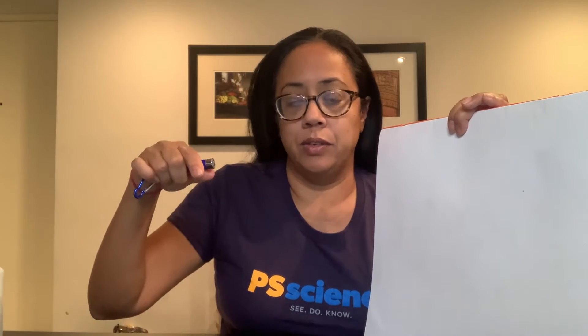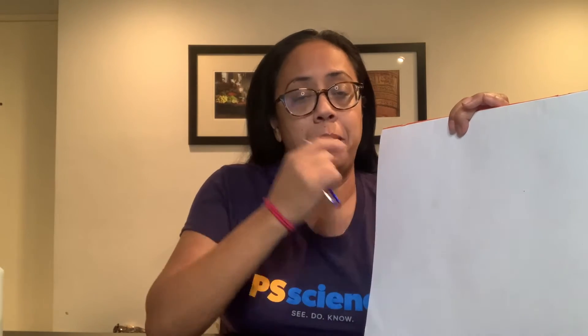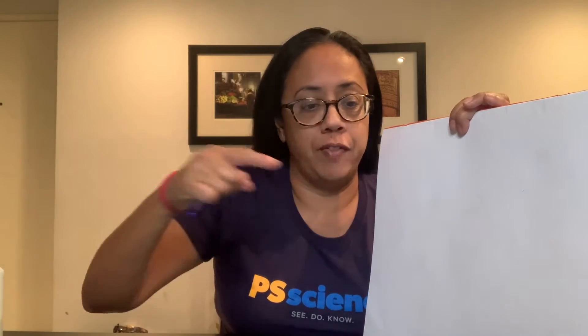Right now the only place where the light is reflecting is at the paper. Between the laser and the paper is full of air. Those particles of air are way too small to help the light bounce off of them so it can get into your eyes. We need to give it some bigger particles to bounce off of.